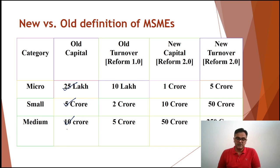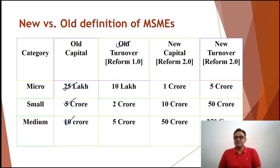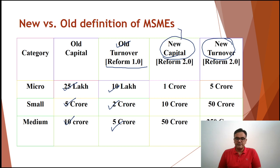From October 2018 and then February 2019 onwards, the idea of turnover was introduced — to include turnover alongside investment because since GST was implemented, it made sense to show MSME benefits not just in terms of investment but also turnover. The turnover figures that came as part of reform 1.0 were Rs. 10 lakh, Rs. 2 crore, and Rs. 5 crore for micro, small, and medium enterprises respectively. Now MSMEs are defined on the basis of both investment and turnover.